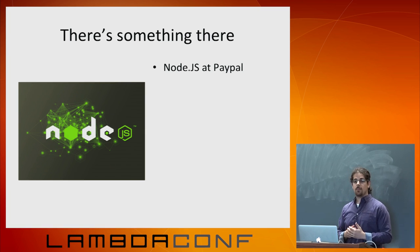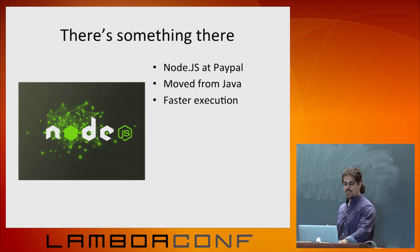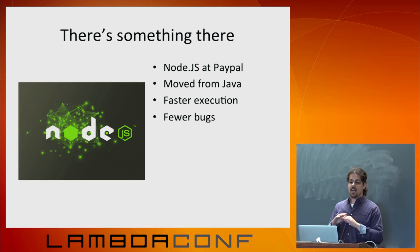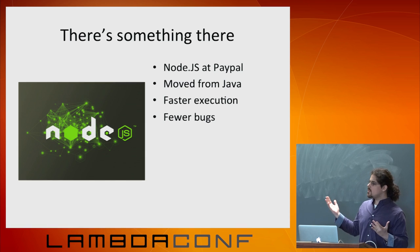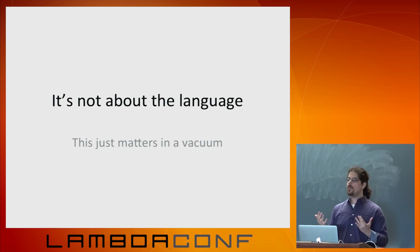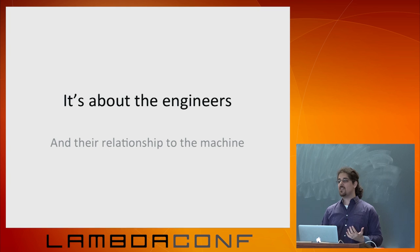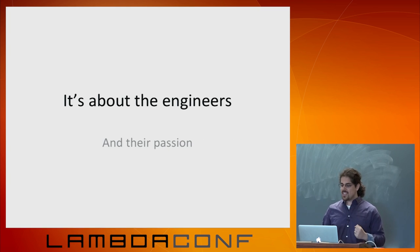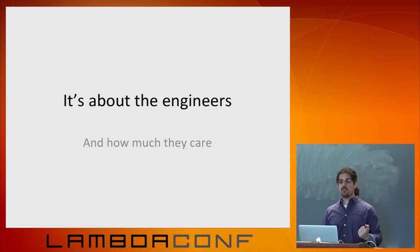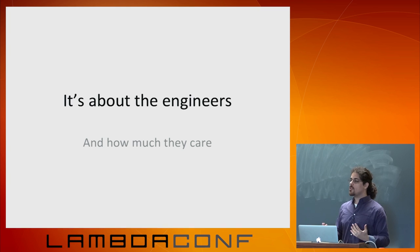At the end of 2013, PayPal wrote this blog post about how Node.js completely revolutionized everything. They moved away from Java and started using Node, got faster execution, and cut down bugs. But here's the thing — they actually did make it faster, they actually did have fewer bugs. And why? It's not about the language. The programming language just matters in a vacuum. It's about the engineers — how they relate to the machine and how happy they are writing this language. That leads to passion, and if they're passionate they're going to care to make the project succeed. When framing these talks about which language to use, don't try to frame it in terms of objective betterness — frame it in terms of passion building.